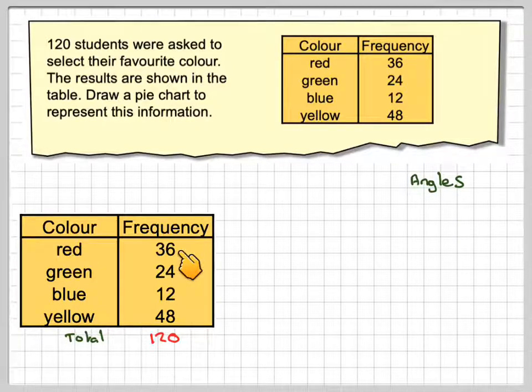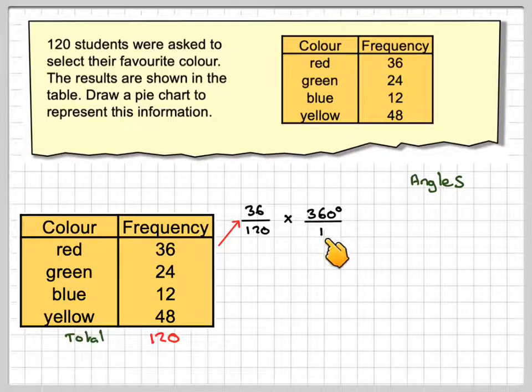So this is 36 out of 120. So if we don't know the total, by the way, we would have to add it up. So it's 36 out of 120. Now in a circle there are 360 degrees, so we say of. Now of in mathematics is replaced with multiplication.